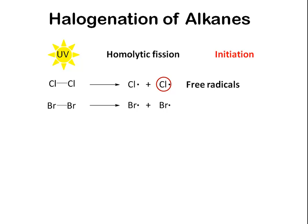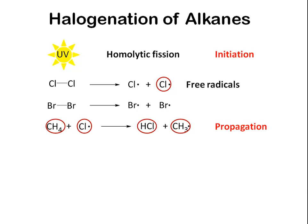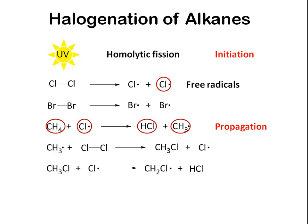After this initiation step, these radicals can then react with the alkanes, such as when a chlorine radical reacts with methane to form HCl and a methyl radical. In this case, one radical reacts with one non-radical to form another radical and another non-radical — this is an example of propagation. Other examples of propagation involve further reaction of the methyl radical with another molecule of chlorine to form chloromethane and a chlorine radical, further reaction of chloromethane with a chlorine radical to form a chloromethyl radical and HCl, and reaction of the chloromethyl radical and chlorine to form dichloromethane and a chlorine radical.